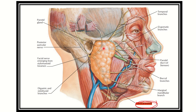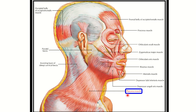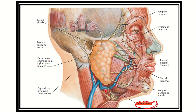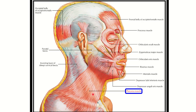After passing the stylomastoid foramen, the facial nerve also gives branches: the posterior auricular, digastric branch, and stylohyoid branch. The cervical branch supplies a muscle in the neck, distributed in that area. In the second picture we can identify this muscle.